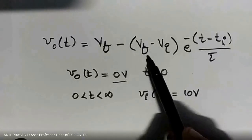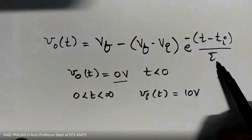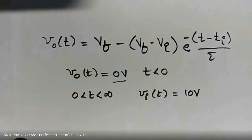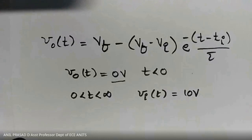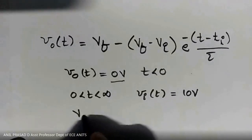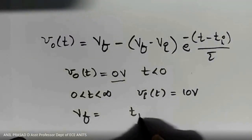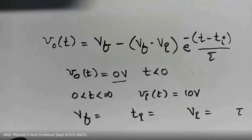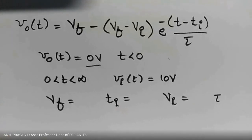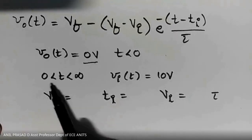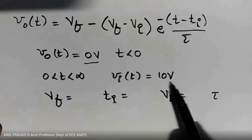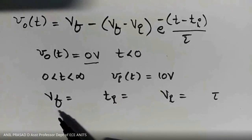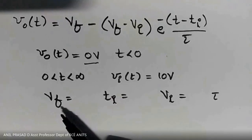For t between 0 and infinity, the input voltage is 10 volts. We identify V_f, t_i, V_i, and tau. V_f is the output voltage at t equal to infinity — the capacitor has enough time to charge fully to 10 volts, so V_f equals 10 volts.